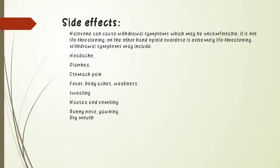The side effects of naloxone: first, it causes withdrawal symptoms that may be uncomfortable but are not life-threatening. On the other hand, opioid overdose is extremely life-threatening. Withdrawal symptoms may include headache, diarrhea, stomach pain, fever, body aches, weakness, sweating, nausea, and vomiting.